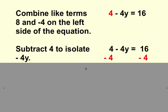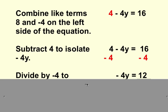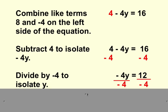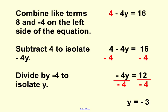After we subtract 4, the equation now says negative 4y equals 12. To isolate the variable y, we will divide by negative 4. Therefore, the final value of y is negative 3.